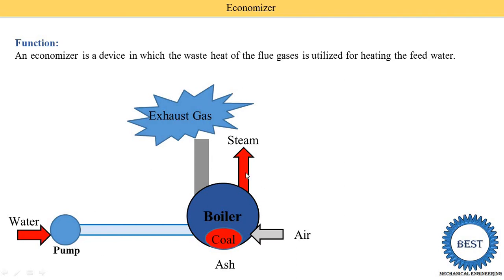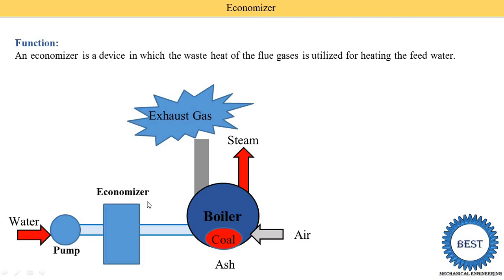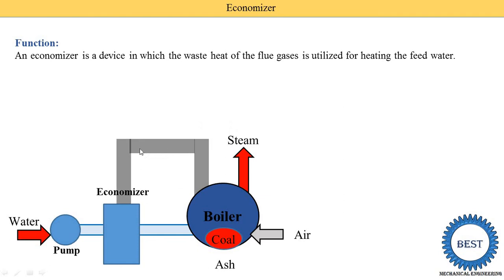Now, suppose we want to heat the water — we install one economizer. If we need to heat the air, we put one air preheater. And if we want to heat the steam, we put one superheater. All three components are supplied with the exhaust gases, meaning heating is done by using the exhaust gas. Water from the pump comes into the economizer, and this exhaust gas is also supplied to the economizer, so this waste energy is utilized to heat the water. Then, we are able to achieve higher temperatures of the steam. After the exhaust gases leave this economizer, they are supplied to the air preheater, then to the chimney, and go to the atmosphere.